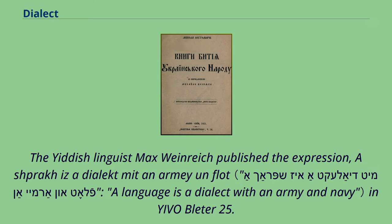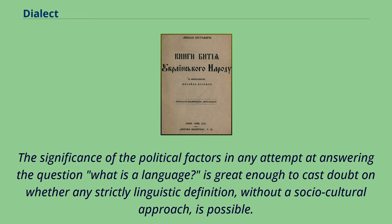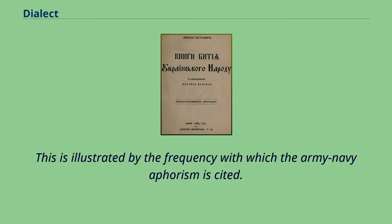The Yiddish linguist Max Weinreich published the expression — commonly paraphrased as 'a language is a dialect with an army and a navy' — in 1945. The significance of political factors in any attempt at answering the question 'what is a language?' is great enough to cast doubt on whether any strictly linguistic definition, without a sociocultural approach, is possible. This is illustrated by the frequency with which the army-navy aphorism is cited.